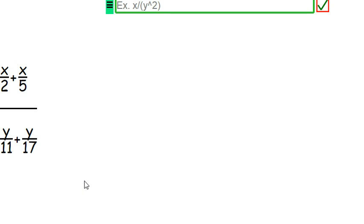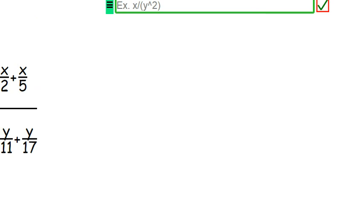Alright. So we have x over 2 plus x over 5. That's what it says.